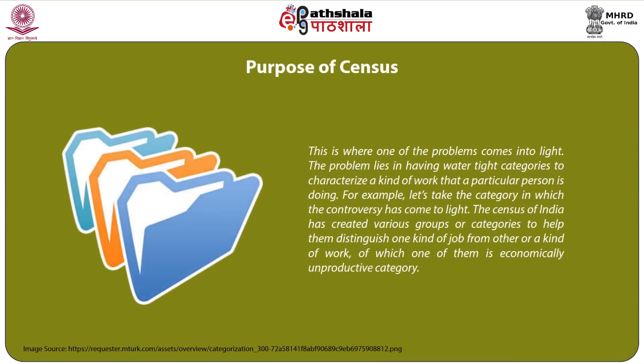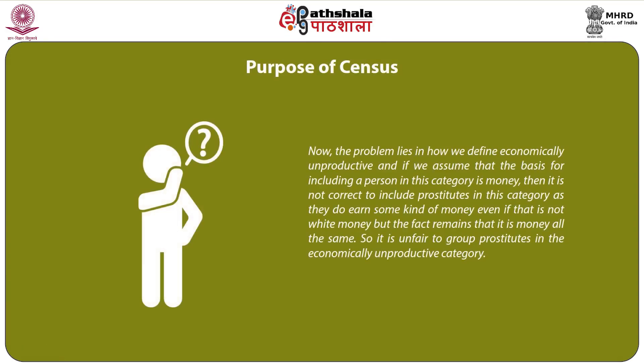After collecting all this information, census officials create groups to put people together according to the kind of work they do. This is where one of the problems comes into light. The problem lies in having watertight categories to characterize the kind of work a particular person is doing. For example, the census of India has created an 'economically unproductive' category. The problem lies in how we define 'economically unproductive' — if the basis is money, then it is not correct to include prostitutes in this category, as they do earn money.